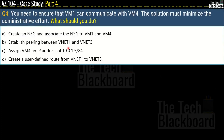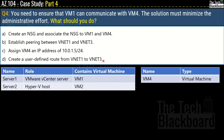Question 4: You need to ensure that VM1 can communicate with VM4, while minimizing administrative effort. What should you do? Options are: create an NSG and associate it to VM1 and VM4; establish peering between VNet1 and VNet3; assign VM4 an IP of 10.0.1.5/24; or create a user-defined route from VNet1 to VNet3. This question may have some missing information, but we have to work with what is given.